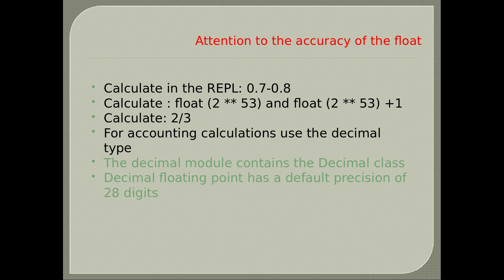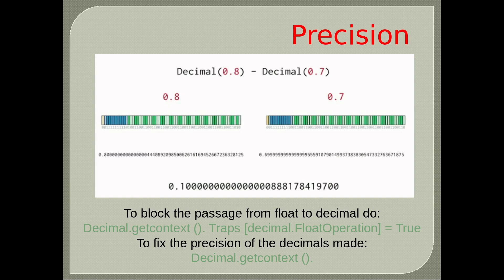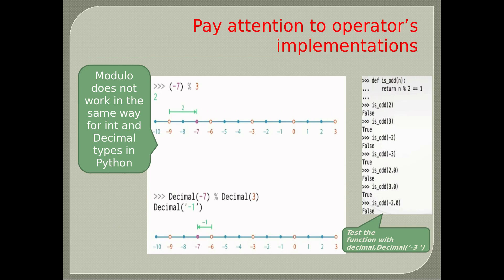The decimal module contains the decimal class. Decimal floating point has a default precision of 28 digits. To block the passage from float to decimal, do: decimal.getcontext().traps[decimal.FloatOperation] = True. To fix the precision of the decimals, write decimal.getcontext(). Pay attention to operator implementations: modulo does not work in the same way for int and decimal types in Python.